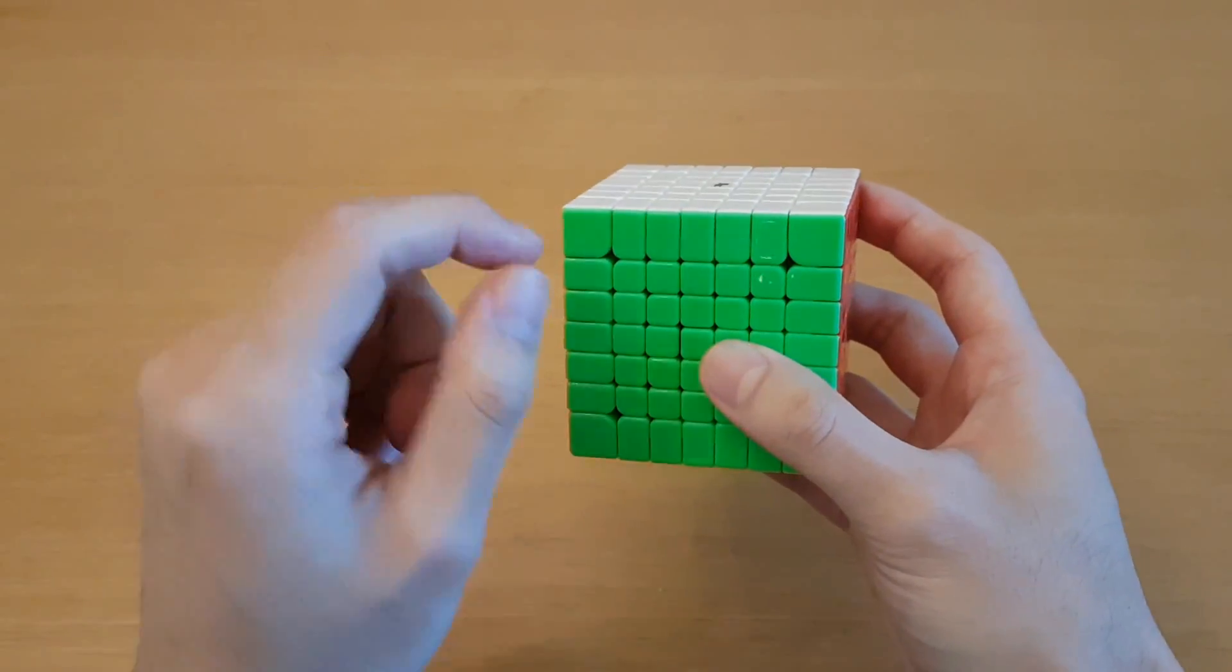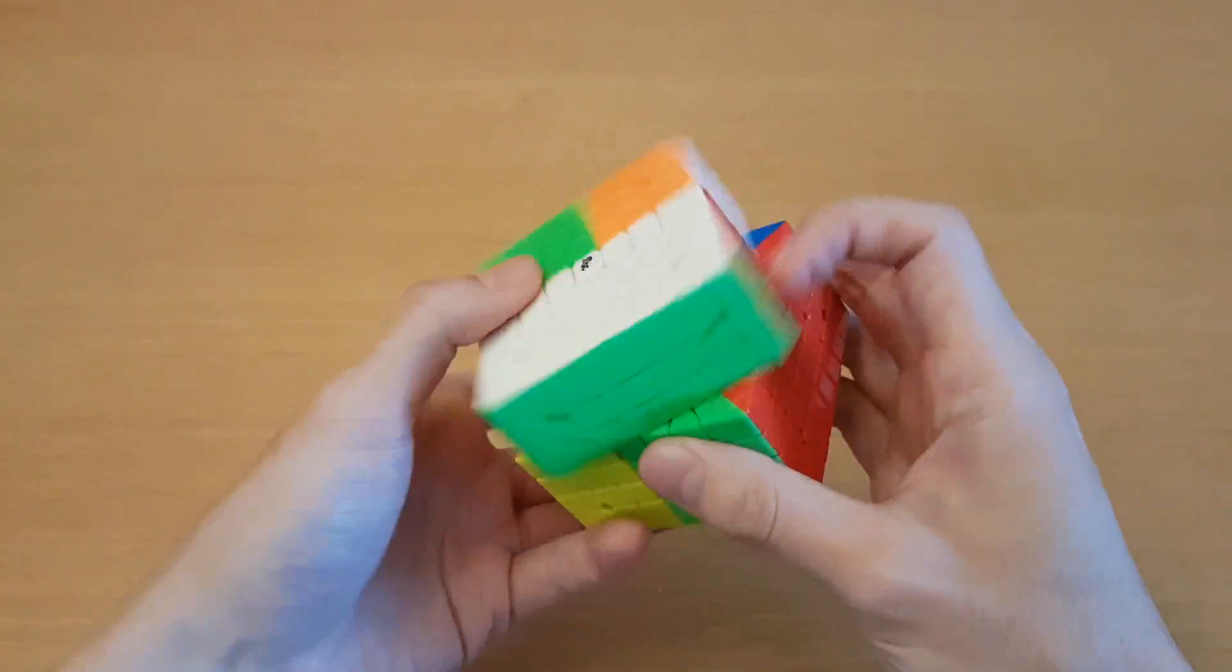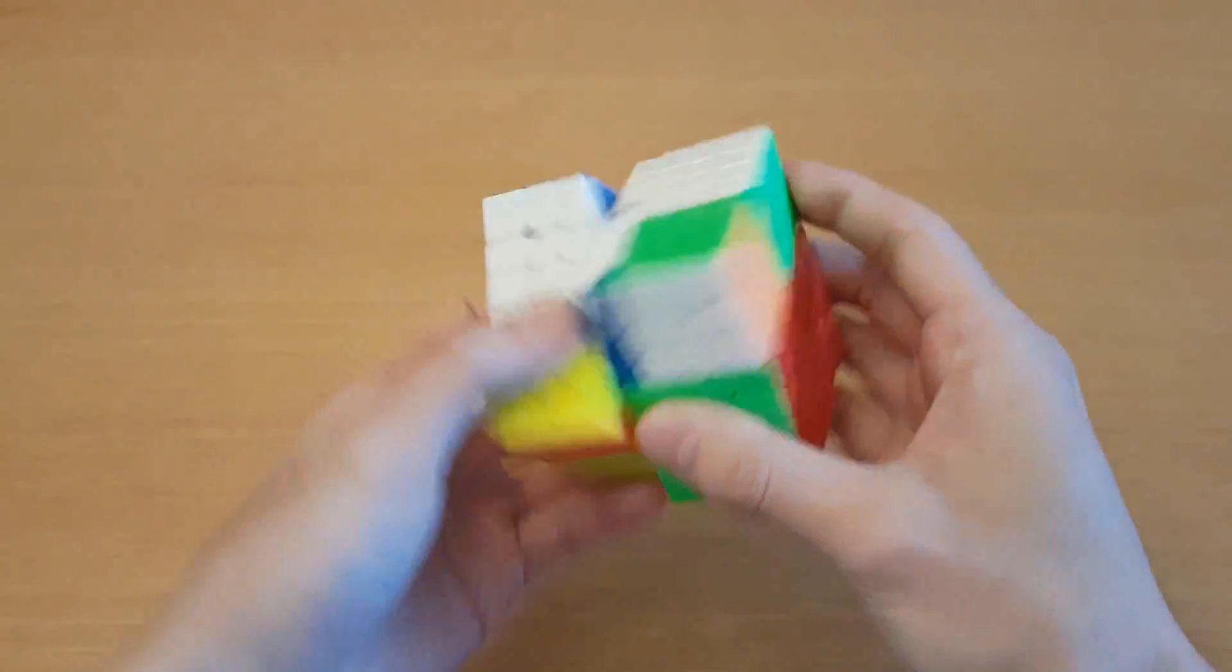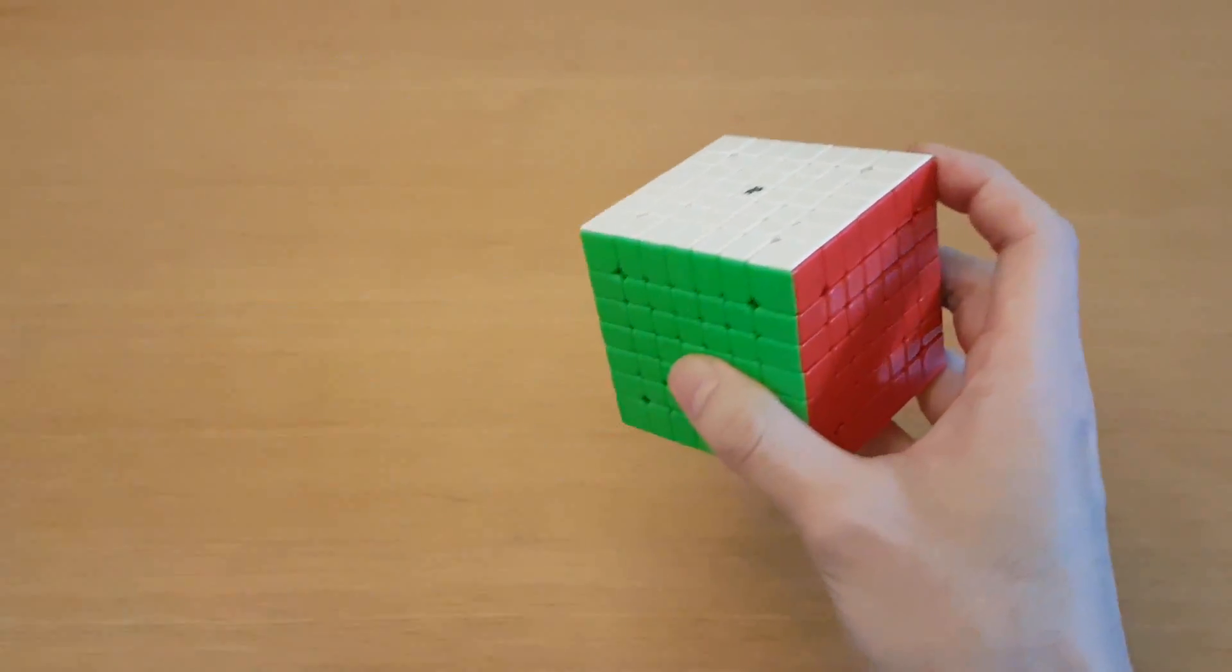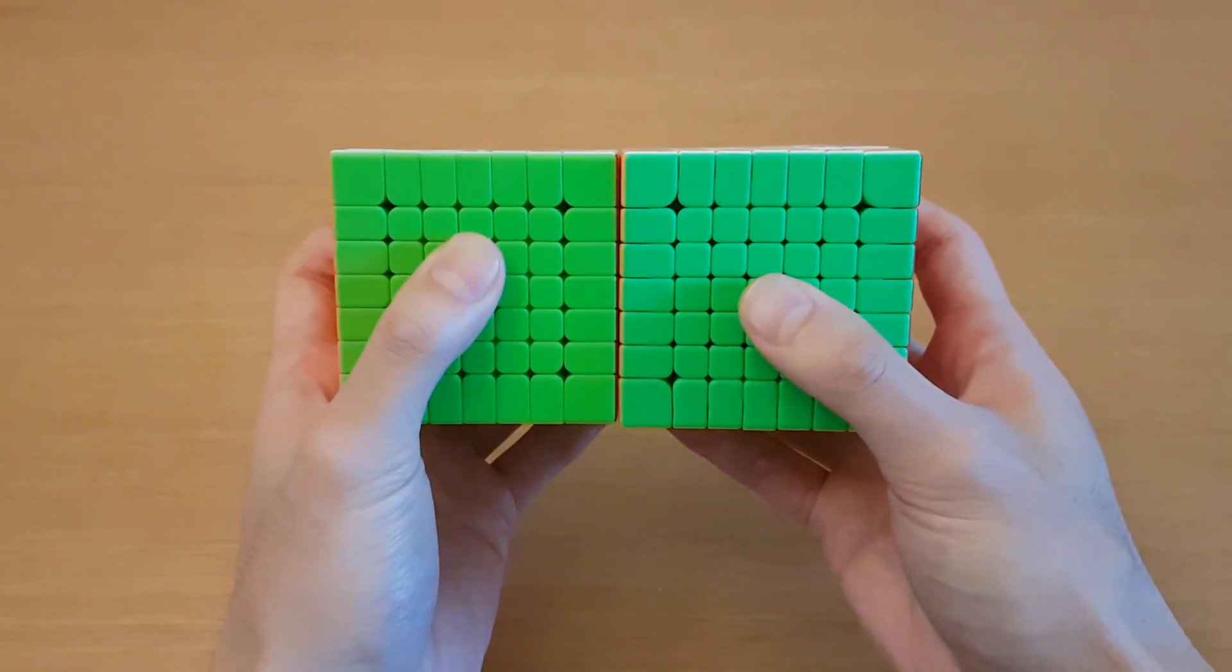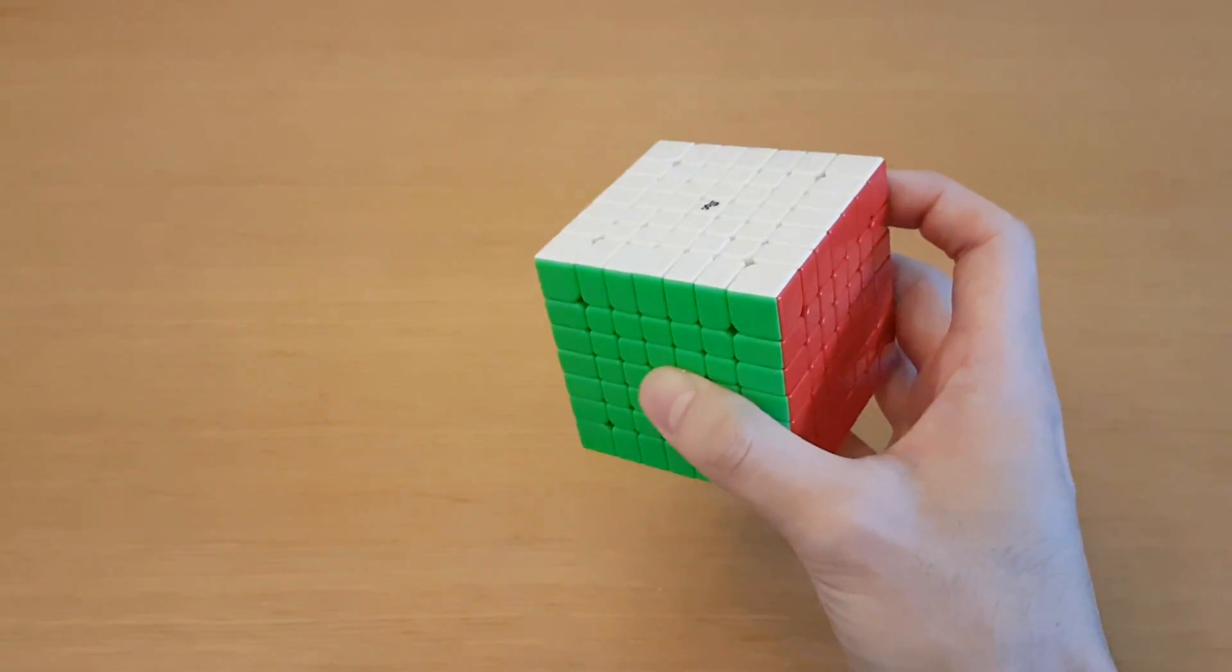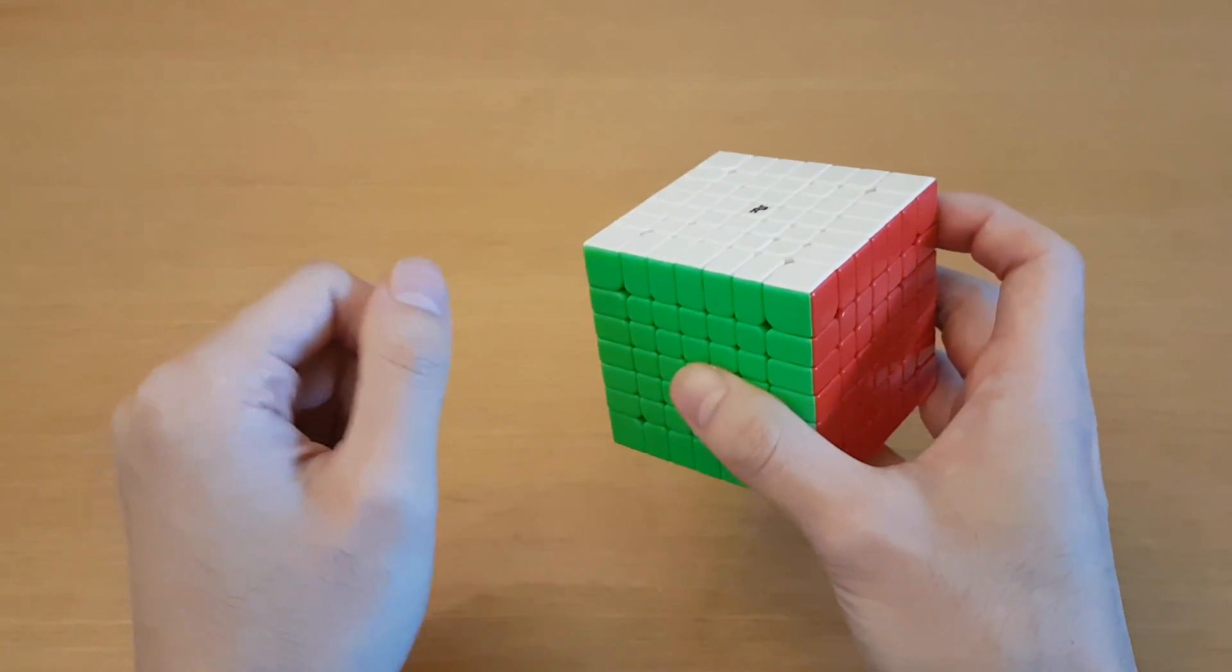Big cubes take a little while to break in, but after tightening it so it didn't pop anymore, I realized that the inner layers are actually much faster than the Spark. The outer layers are pretty similar, and pretty much the only downside to this is that the Spark is about 1mm smaller, which I like more, but that's pretty much the only better thing about the Spark.